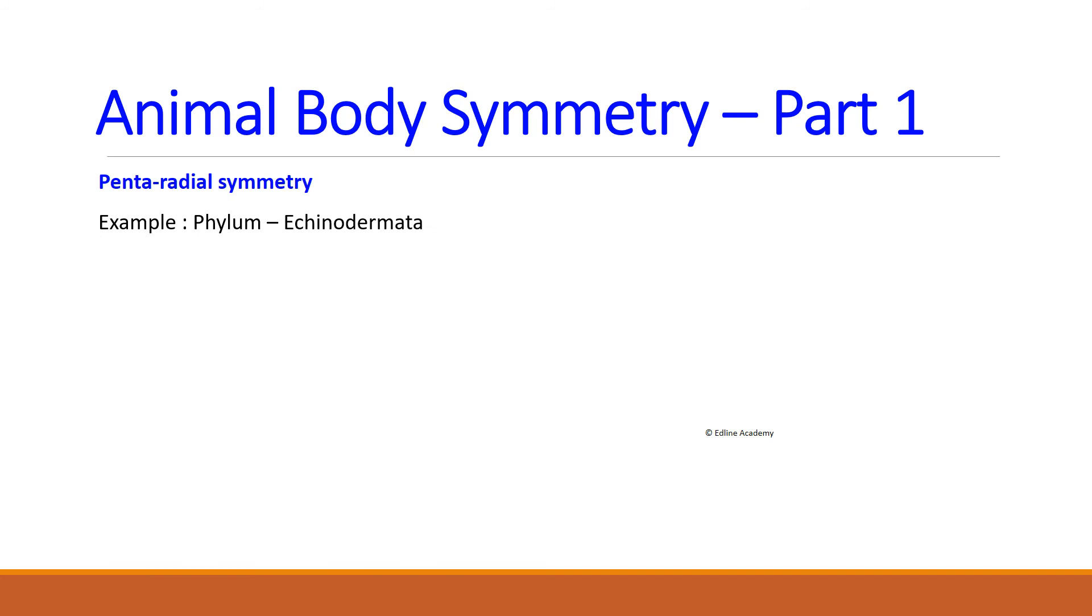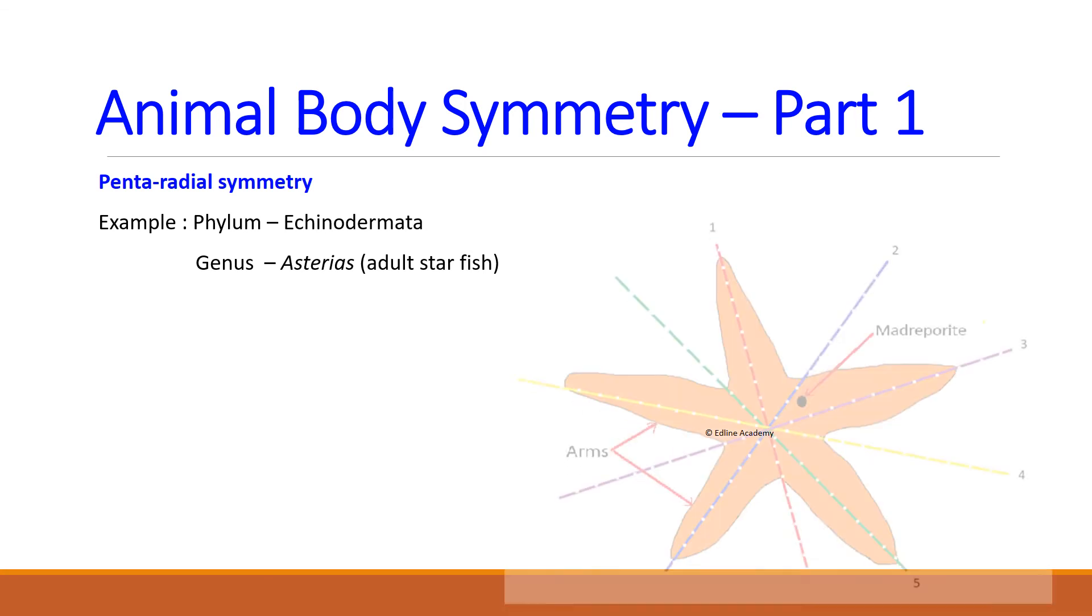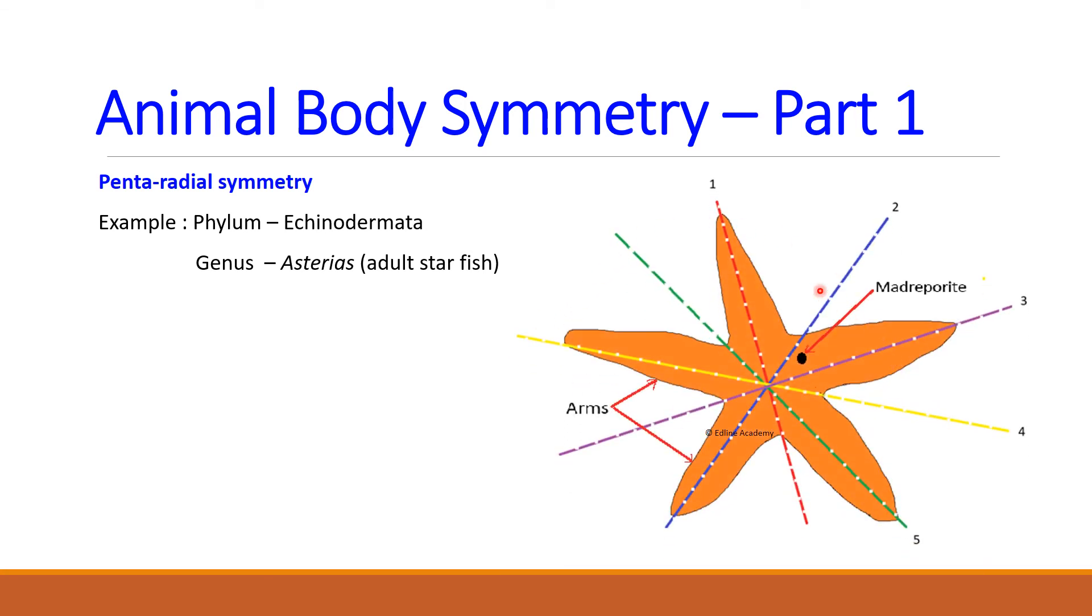For this I am going to take one example that is adult starfish. The name of the species is Asterias. Just take a look at this diagram. This is starfish. It has five arms and a central disc. Over here the central disc is not visible. If you cut this animal along any of these five axes, you will be able to get two mirror images. But if you cut this animal along any other axis, you are unable to get two mirror images. So as such this type of symmetry is known as pentaradial symmetry.